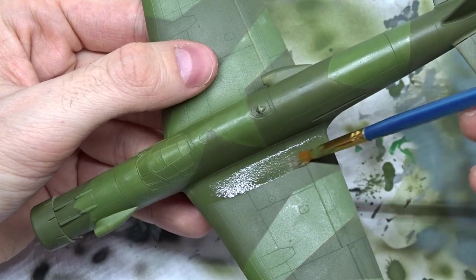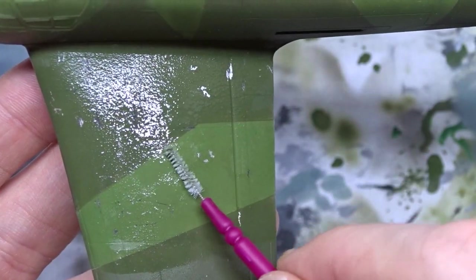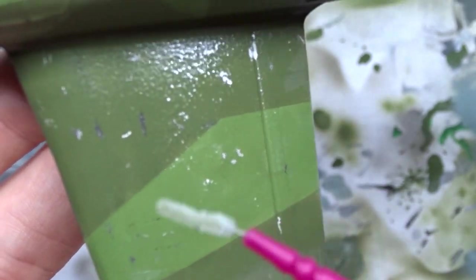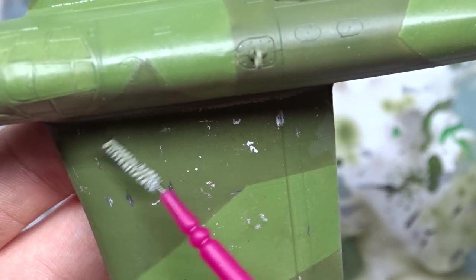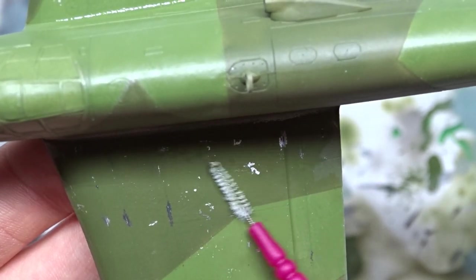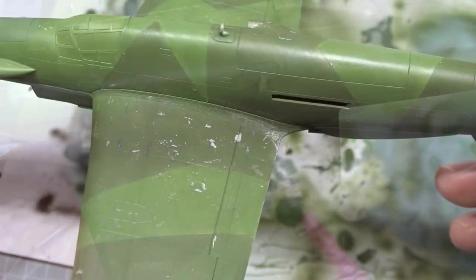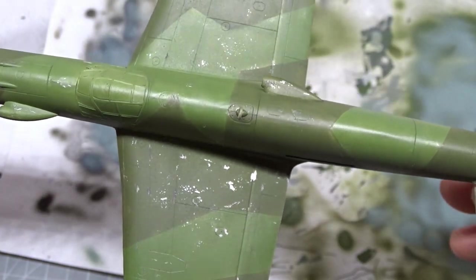When everything was fixed I brushed on some water in the areas where I wanted to do the chipping. Then I used a toothpick and again the interdental brush to create the chipping effect. Again it might not be realistic on an airplane that wasn't used much like the 335, but I think it adds a lot to the finished model.